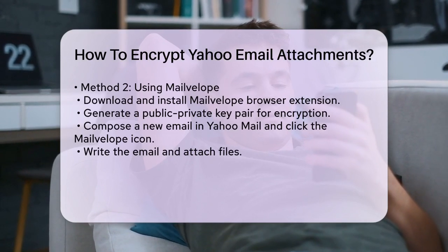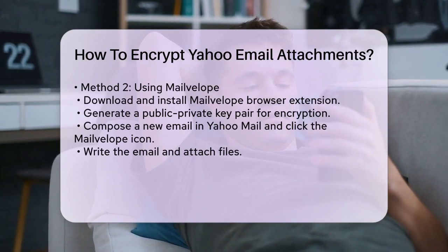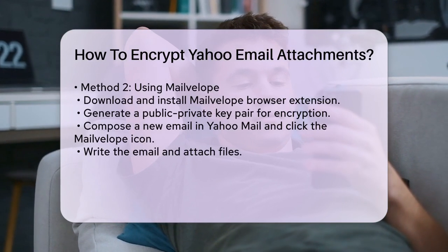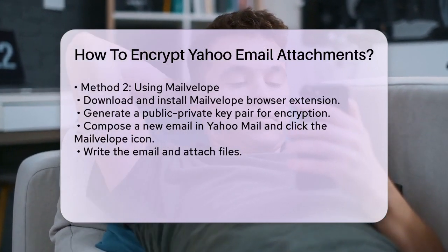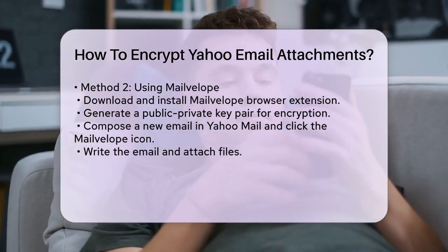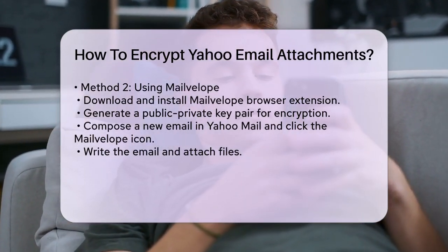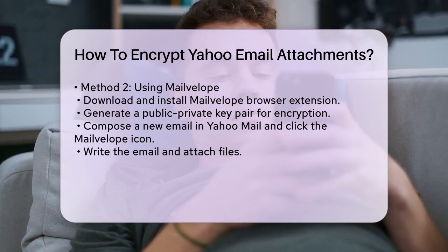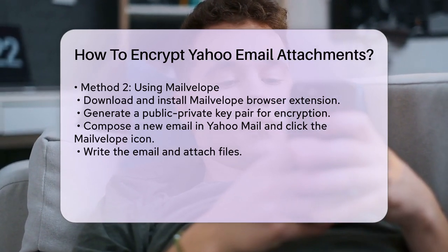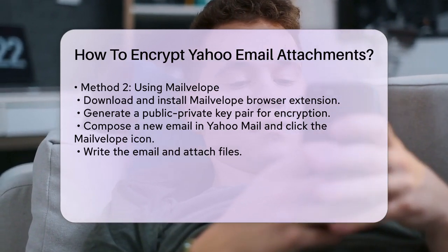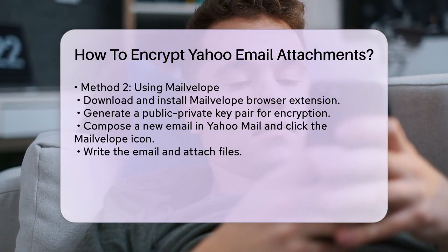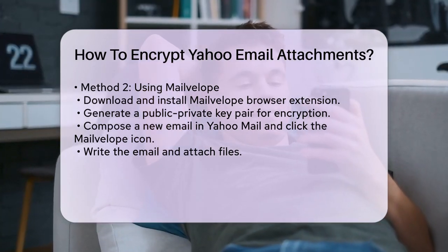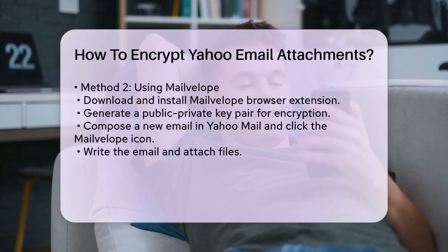Another option is to use a third-party email encryption tool like MailVelope. Download and install MailVelope, which is a browser extension available for Google Chrome and Mozilla Firefox. Configure MailVelope to get started — this involves generating a public-private key pair, which is necessary for encrypting and decrypting messages.